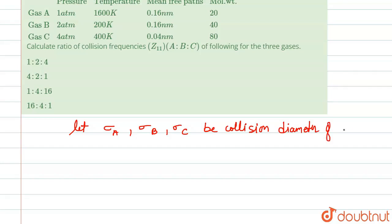Therefore, we have a formula for lambda which equals kT over √(2π σ² p). From here we can say that σ is directly proportional to √(T/(λp)).